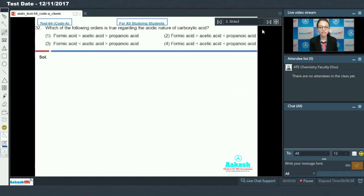Next question, question number 32: Which of the following order is true regarding the acidic nature of carboxylic acid? We have given formic acid, ethanoic acid, and propanoic acid. Ethanoic acid is acetic acid. So we have three acids left and we need to find out the order of their acidic strength.